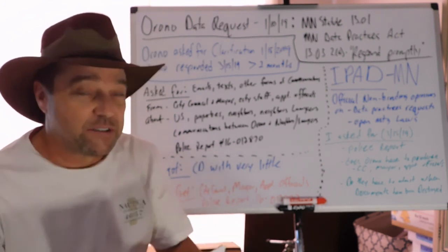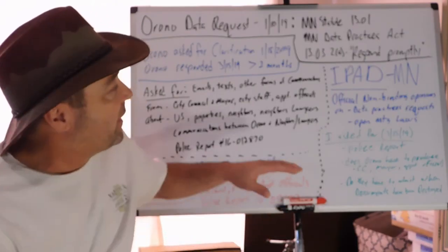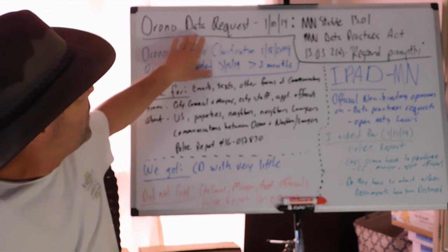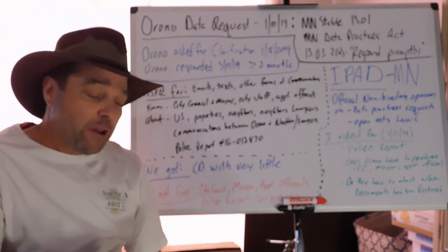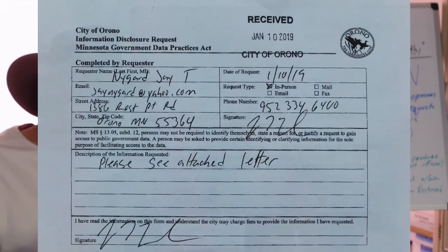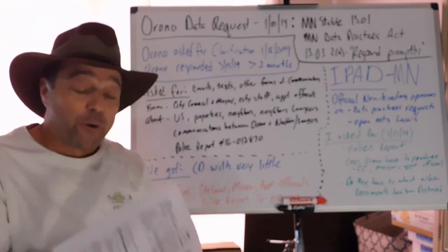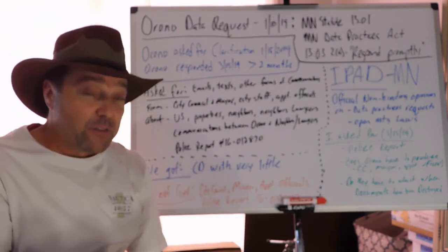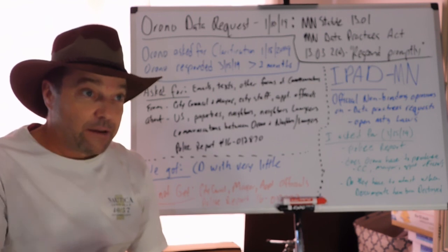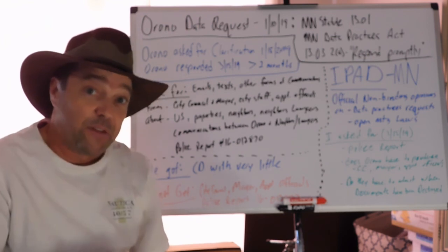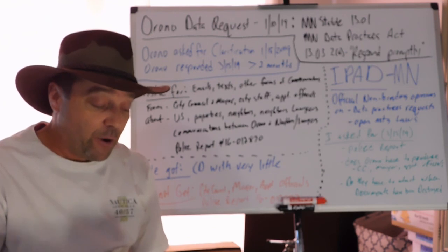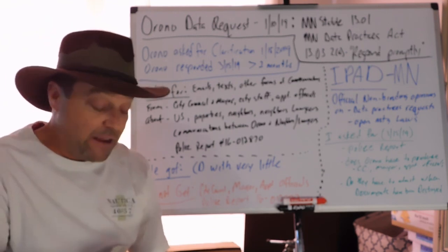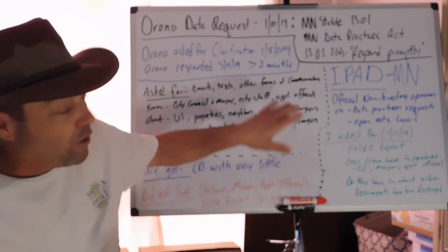This data request is about getting a lot of information to combine. My data request was 1-10-19, and if you look here I got the city to stamp it received, City of Orono on the front page. I like to bring mine up there and have them date stamp it, so there's no question about what you delivered.